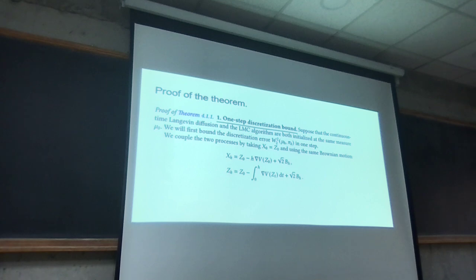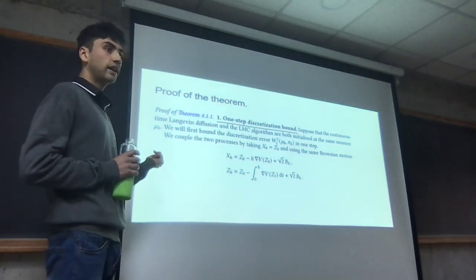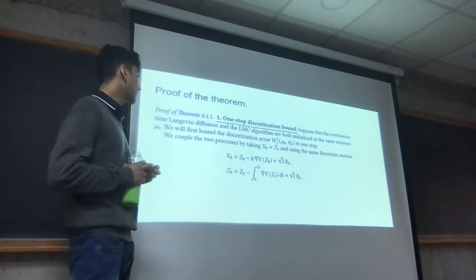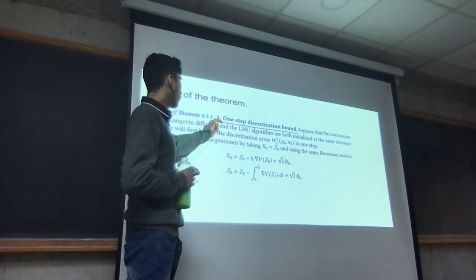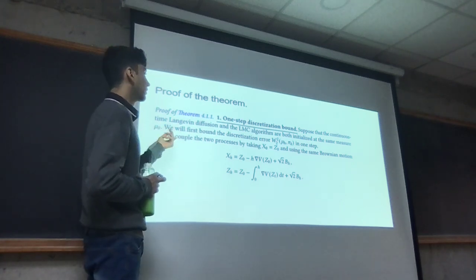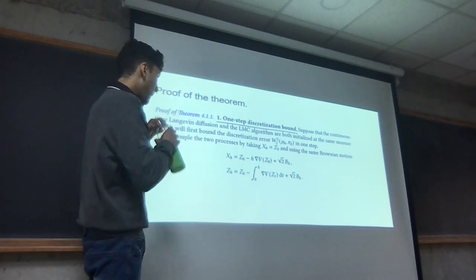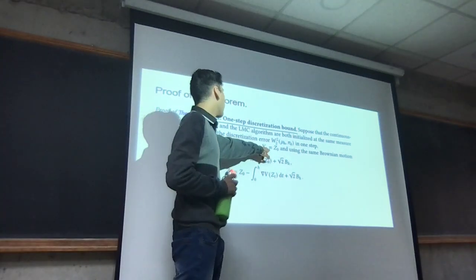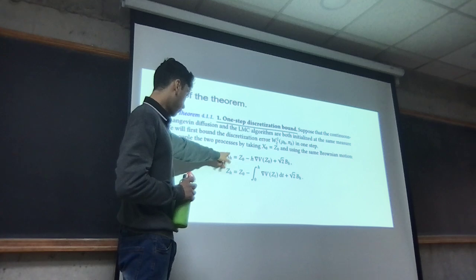The idea of the proof is to first do a coupling between the continuous diffusion and the algorithm, and estimate the Wasserstein distance between them. In the first step, we bound this for k equals 1. We assume both the algorithm and the diffusion are initialized at the same measure mu_0. We couple the two processes by taking x_0 equals z_0 and using the same Brownian motion, and define these two processes.